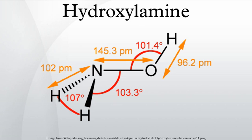Oximes, for example dimethylglyoxime, are also employed as ligands. NH2OH reacts with chlorosulfonic acid to give hydroxylaminosulfonic acid, a useful reagent for the synthesis of caprolactam: HOSO2Cl + NH2OH → NH2OSO2OH + HCl. The hydroxylaminosulfonic acid, which should be stored at 0°C to prevent decomposition, can be checked by iodometric titration.